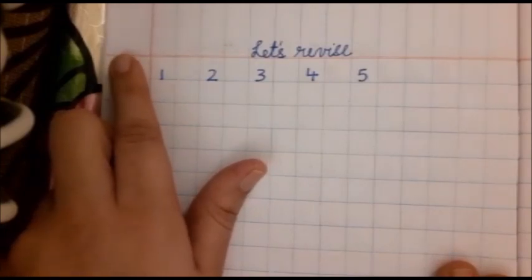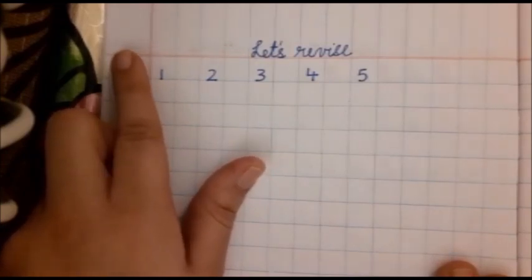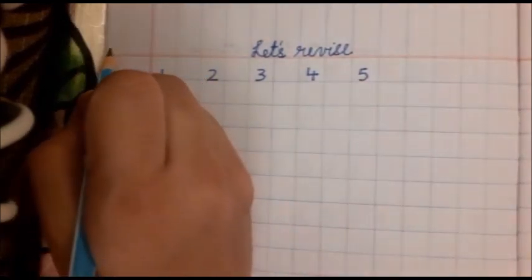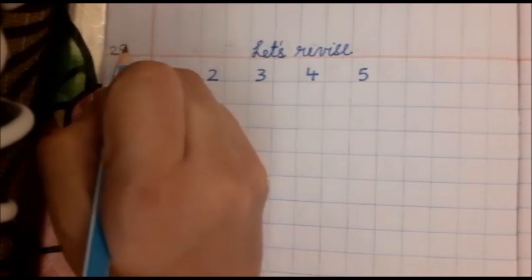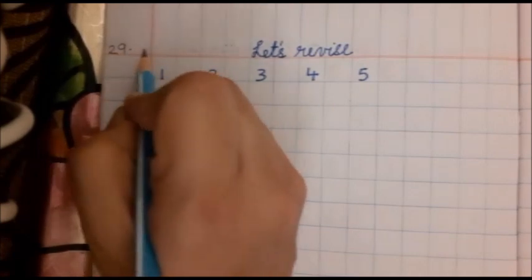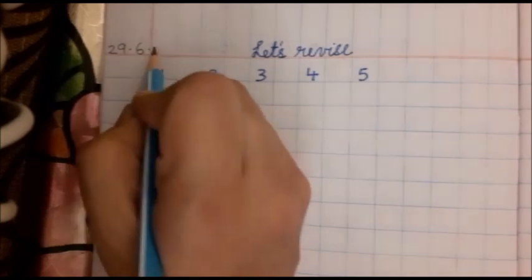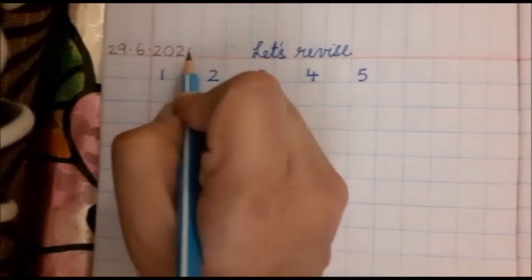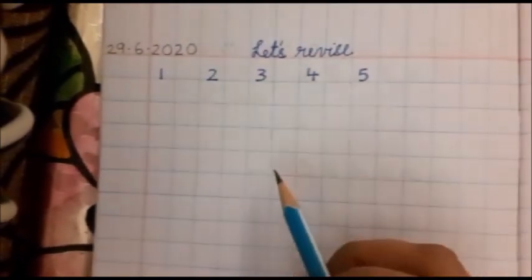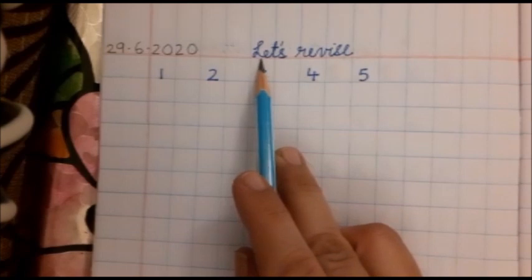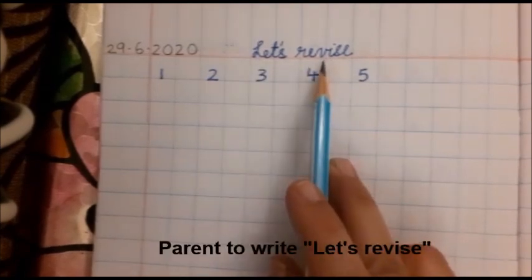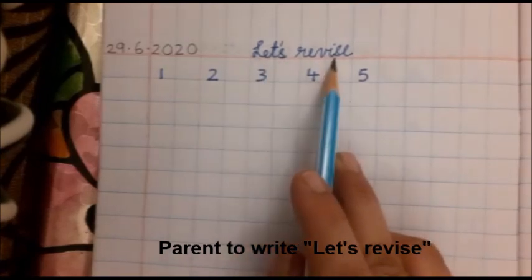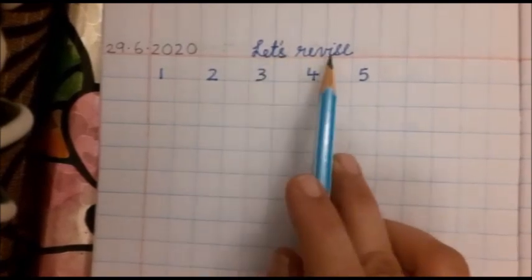The date today is June 29th. So on the red line, 29.6.2020. And Anubha ma'am has written on the top, Let's revise. Mama papa will help the child. Mama papa to write this on the top, Let's revise.